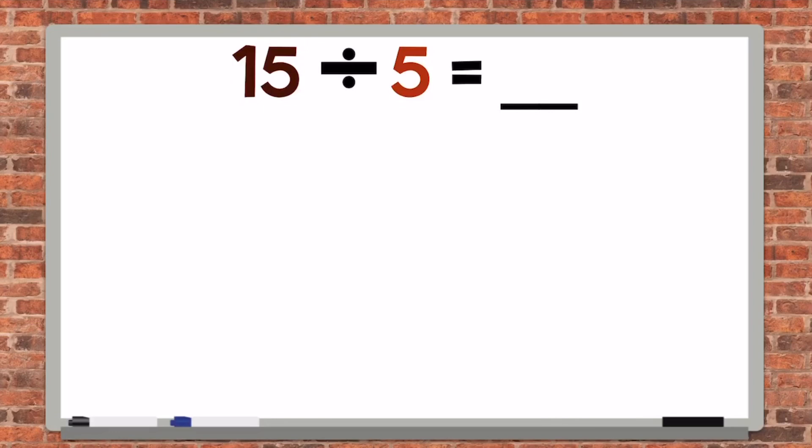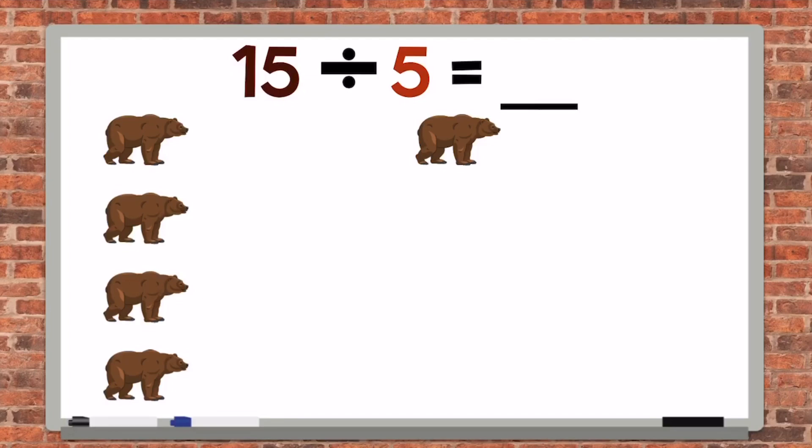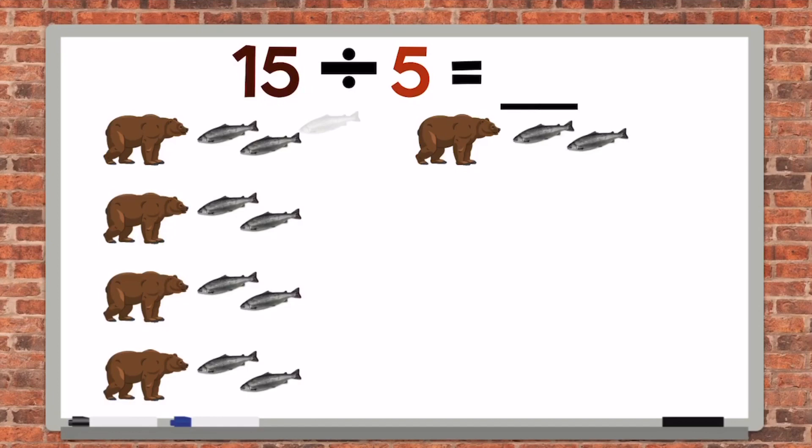15 salmon divided by 5 grizzly bears. We need to draw the 5 grizzlies, and now we need to count to 15 until we run out. 15. That means that 15 divided by 5 equals 3, because 15 salmon divided by 5 grizzly bears gives each bear 3 salmon.